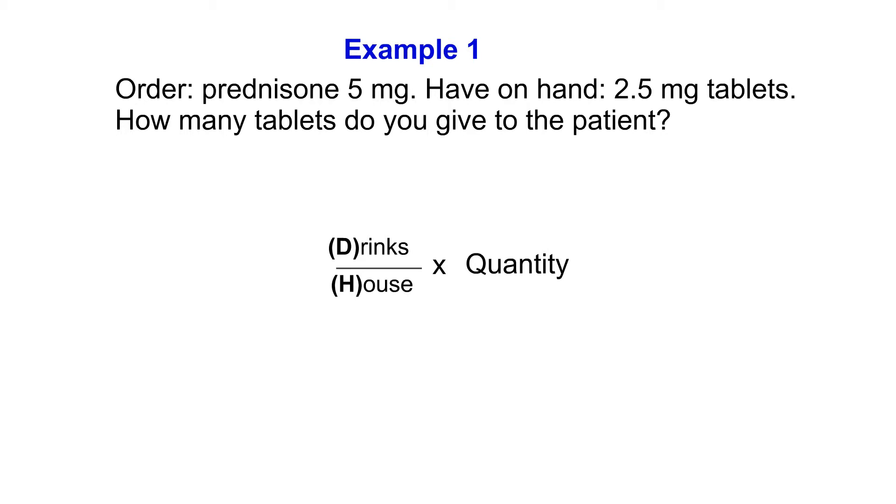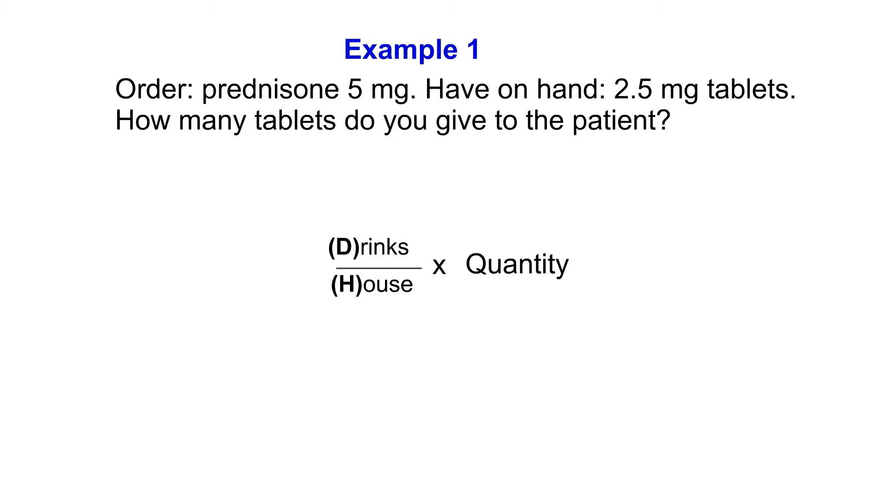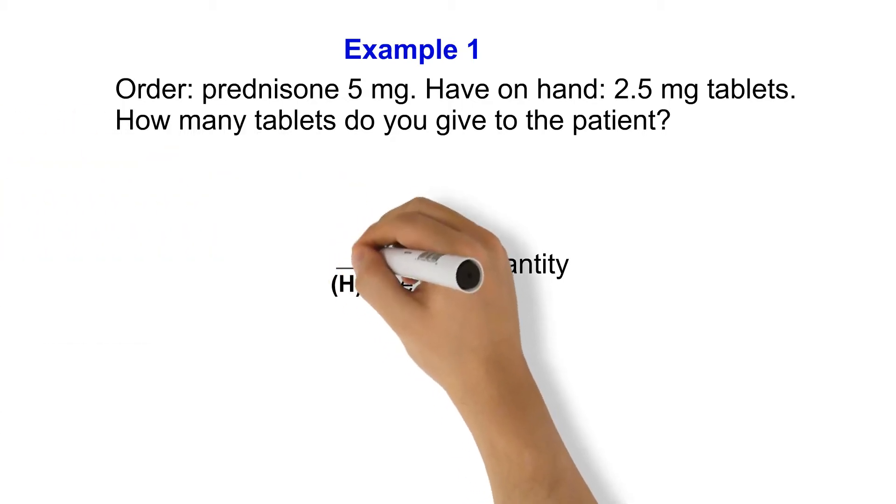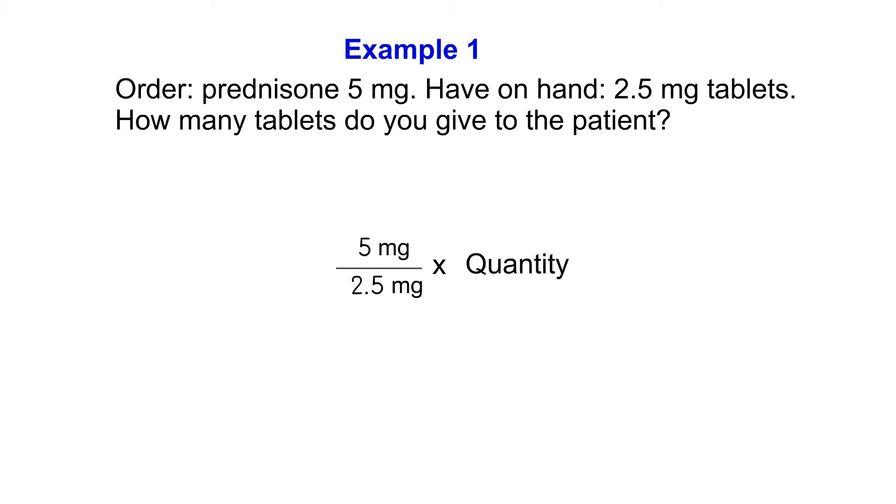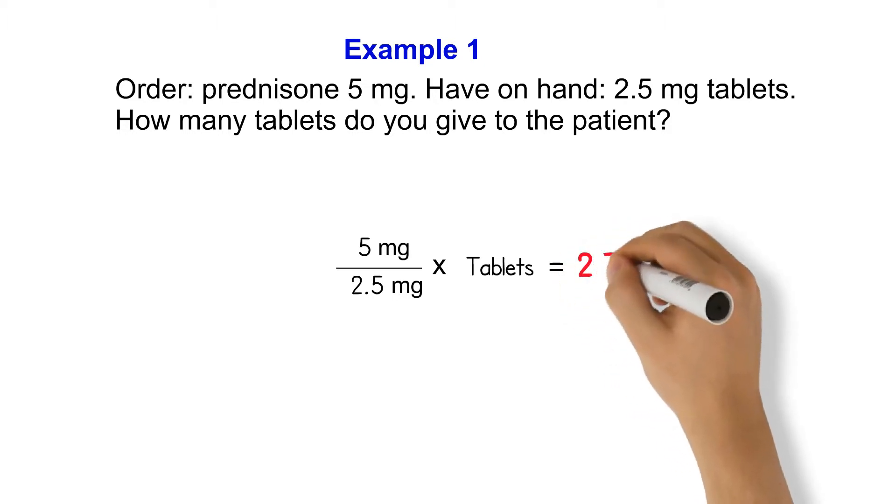So we got a total dose of 5 mg. So we go ahead and put that on the top. Then what we have on hand is 2.5 mg, so we put that on the bottom. And we times that by the tablets, which is the quantity we're using. So what we end up with is 5 mg divided by 2.5 mg times tablet, which equals 2 tablets. So the correct answer is 2 tablets.